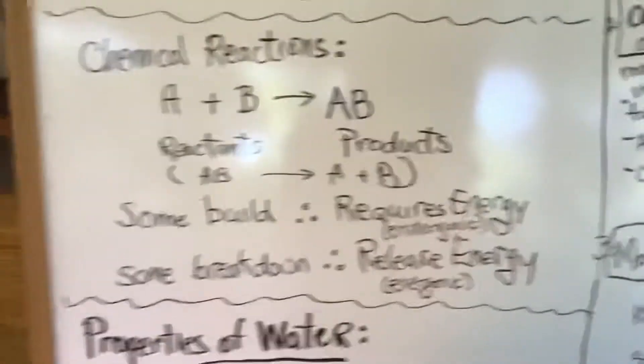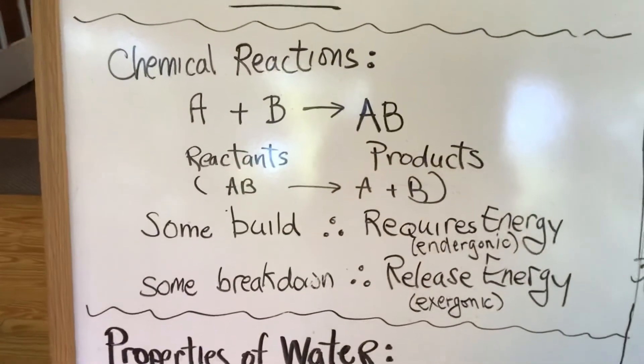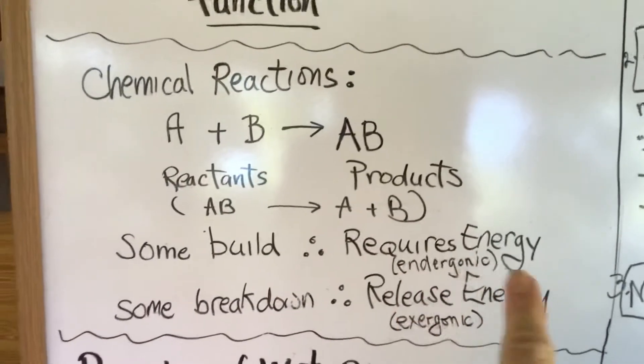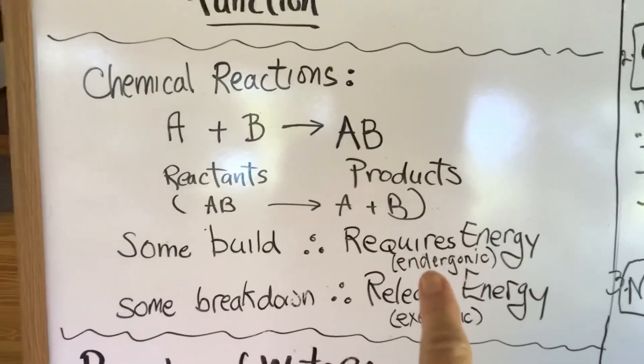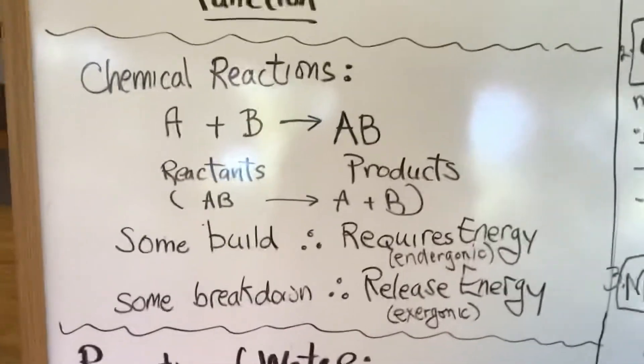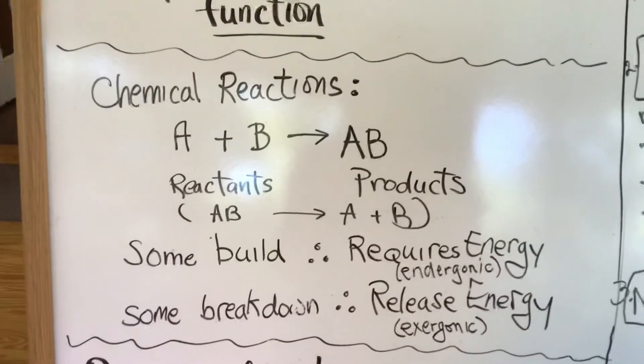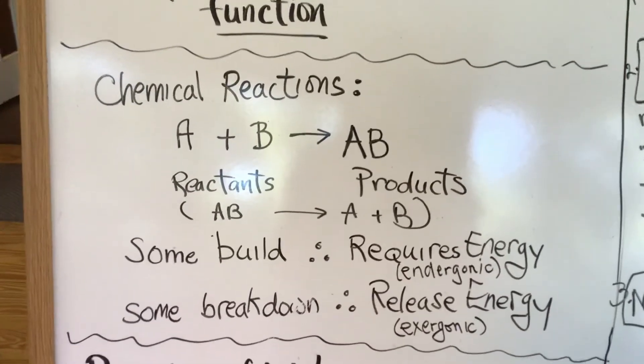Some reactions build molecules, like A + B making AB, which is building something. That generally requires energy and it's called endergonic in biology. If you've had chemistry before, you know that's called endothermic, but in biology, that means animals that are warm-blooded, so we use endergonic instead.